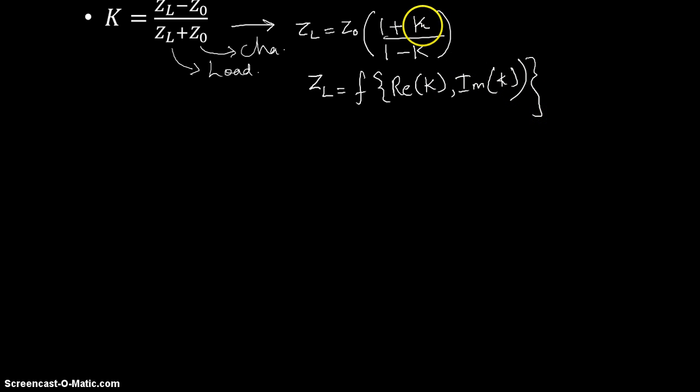It means that all of these terms - your ZL value, your Z0 value, your K value - they are all complex functions. Complex functions have a real term and an imaginary term. So depending on the values of ZL and Z0 we can generate a plane where all of the K values can be plotted.